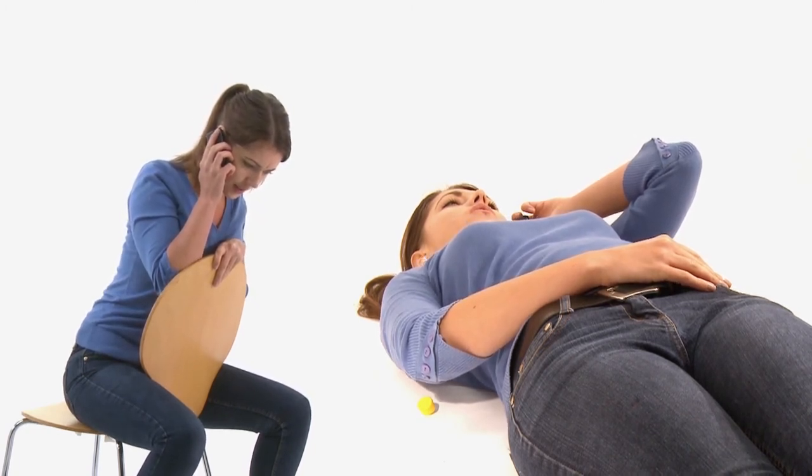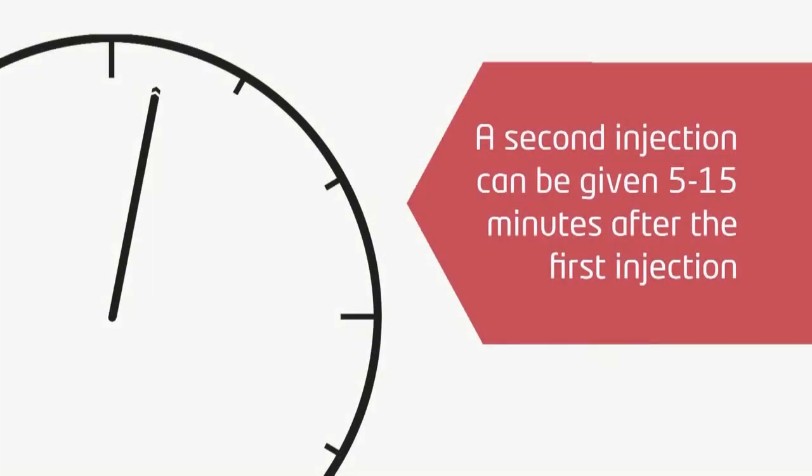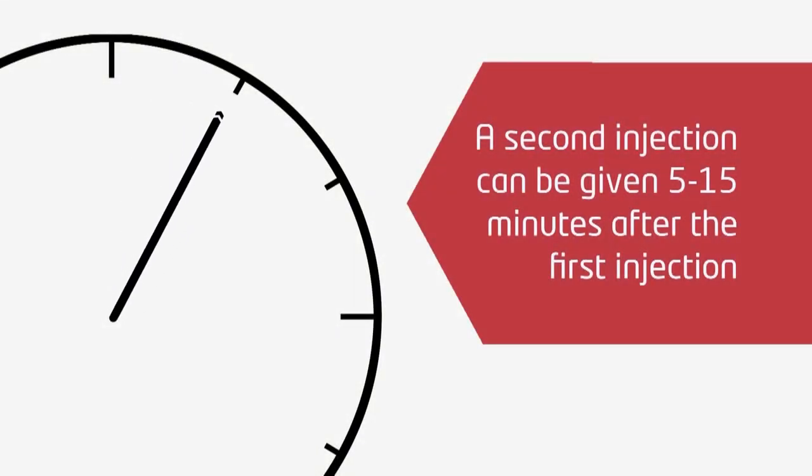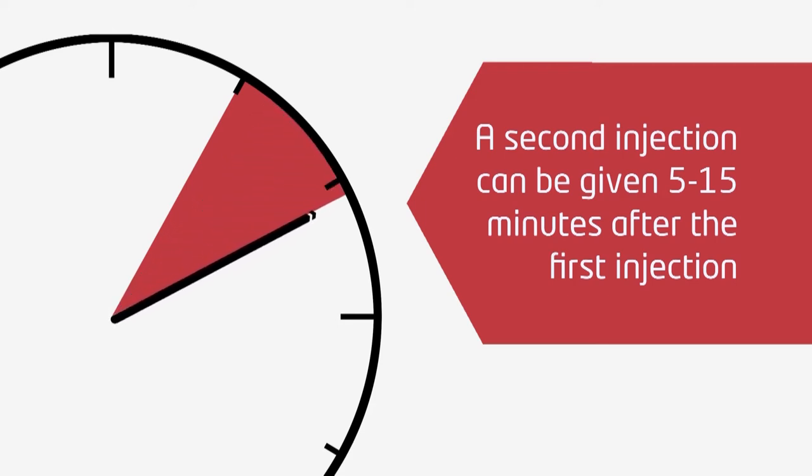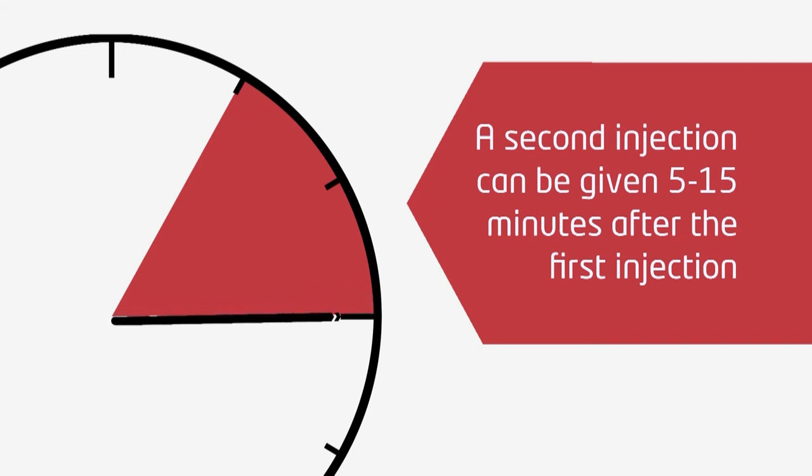Unconscious patients should be placed on their side in the recovery position. If you are not feeling better or if you begin feeling worse, a second injection with a different Jext can be administered 5-15 minutes after your first injection.